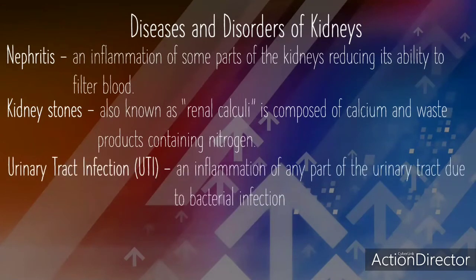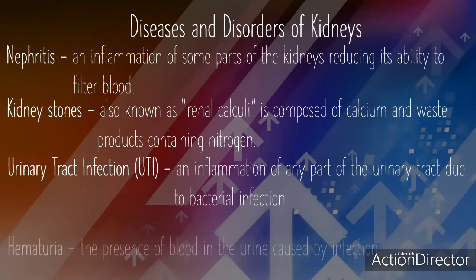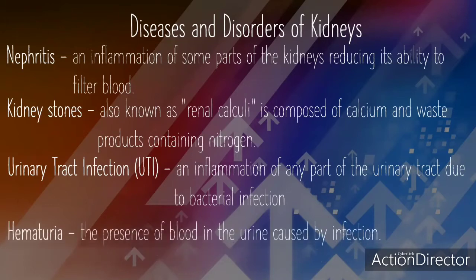Urinary tract infection, or UTI, is an inflammation of any part of the urinary tract due to bacterial infection. Hematuria is the presence of blood in the urine caused by infection.